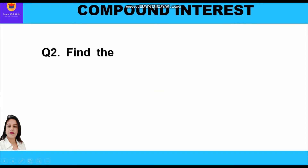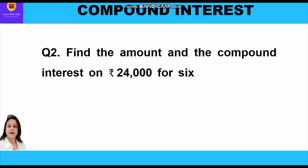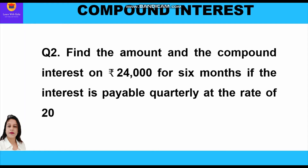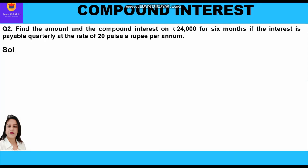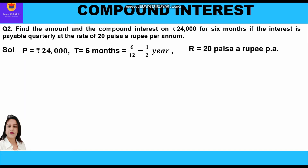Now let's take the second question: find the amount and compound interest on rupees 24,000 for six months if the interest is payable quarterly at the rate of 20 paise per rupee per annum. Principal = rupees 24,000; time = 6 months = 6/12 = 1/2 year. Rate: 20 paise per rupee per annum — since 1 rupee = 100 paise, rate = 20/100 × 100% = 20 percent per annum.